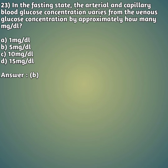Question 23: In a fasting state, the arterial and capillary blood glucose concentration varies from venous glucose concentration by approximately how many mg/dL? Option A: 1 mg/dL, option B: 5 mg/dL, option C: 10 mg/dL, option D: 15 mg/dL. The right answer is option B, 5 mg/dL.